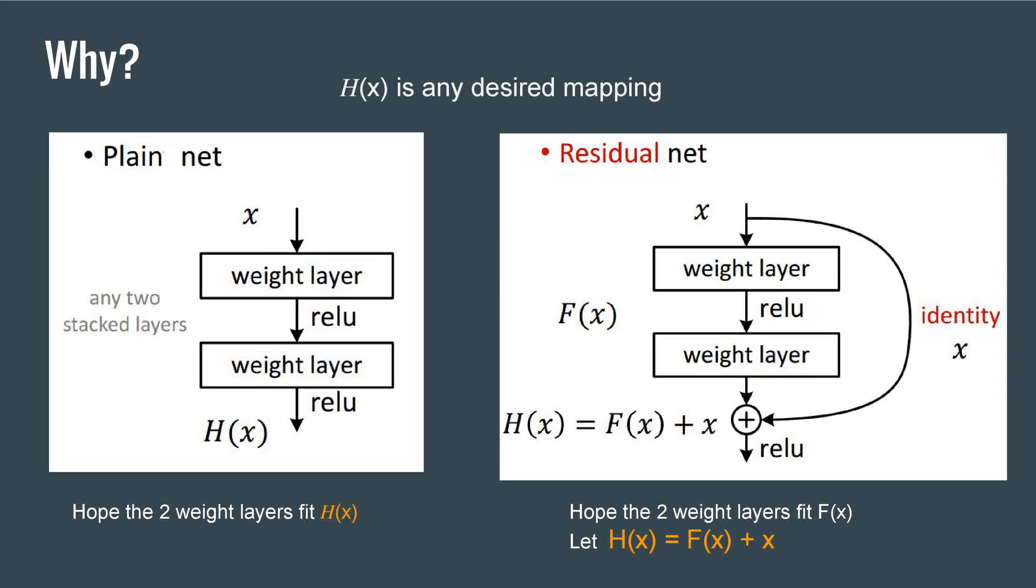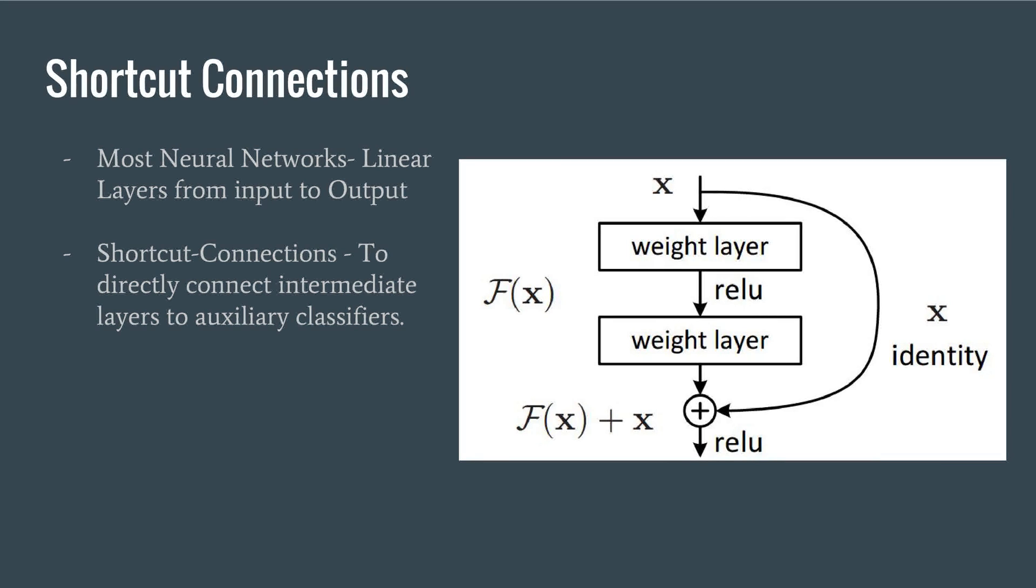Degradation makes it hard to approximate H(x) in plain nets. With residual learning reformulation and optimal identity mappings, the solver may simply drive F(x) towards zero. In shortcut connections, a few intermediate layers are directly connected to auxiliary classifiers for addressing degradation and vanishing gradient problems.